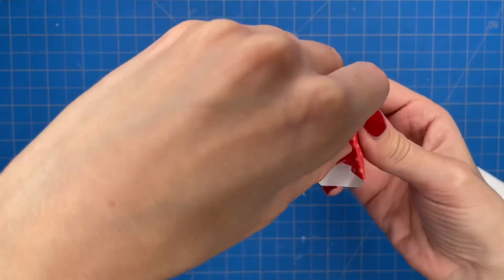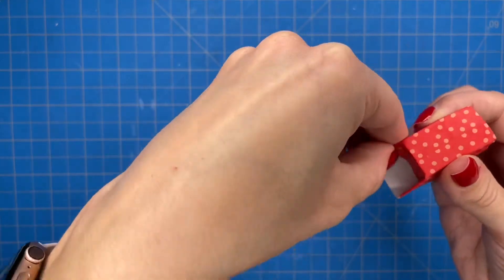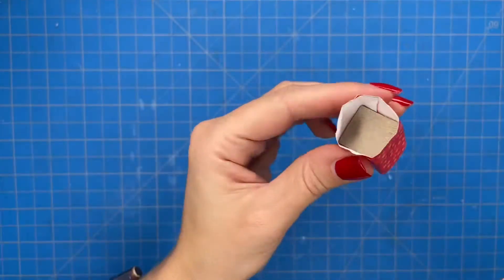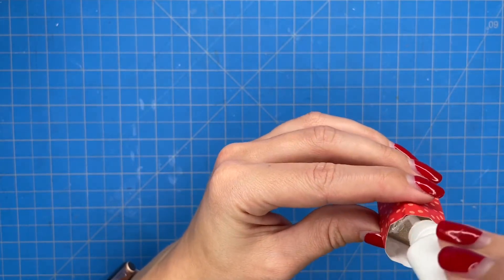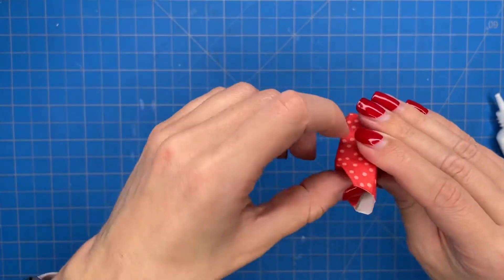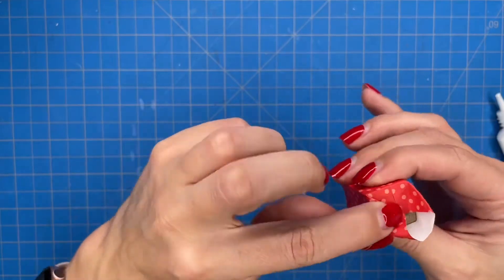On the side that has the end of the paper you're just going to push it in towards the block. And again I am creating my folds before I apply any glue. And then you're going to take the two side flaps and then push them inward.